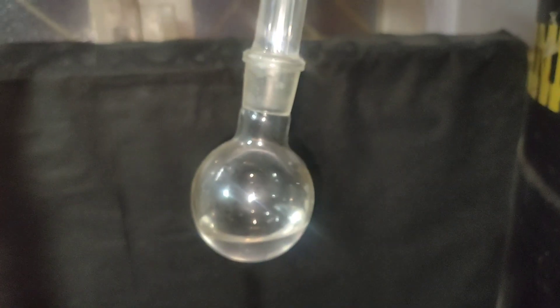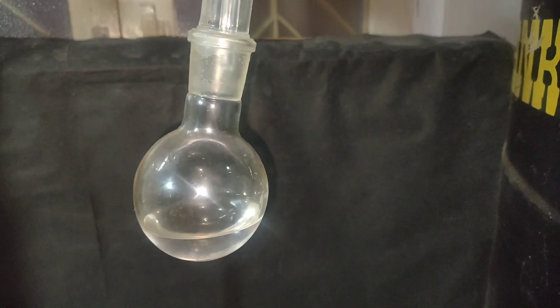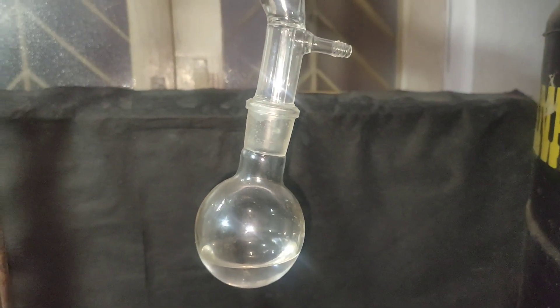I collected all the distillate that came around 50 to 65 degree celsius. This could be the chain isomers of hexane.